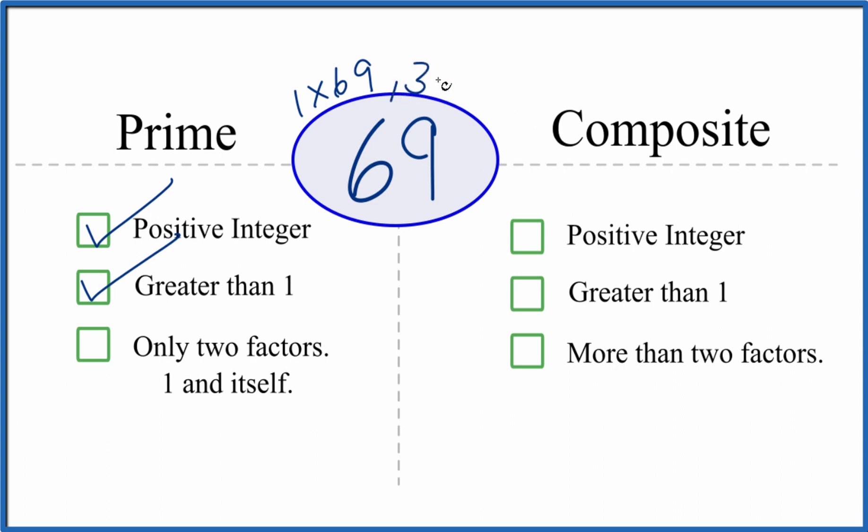It turns out that three times 23 equals 69. So there are more than two factors.